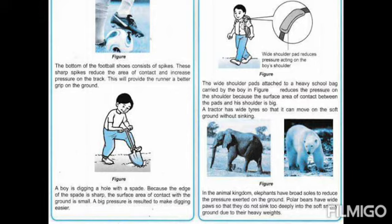We can take the camel and polar bear as examples. These are large animals — the polar bear can easily move on ice, and the camel can easily move on sand. The reason they can move so easily is that their feet are very broad, giving a very large area of contact. This is why they do not sink into the sand or snow.